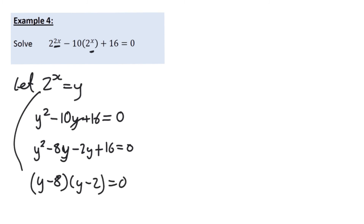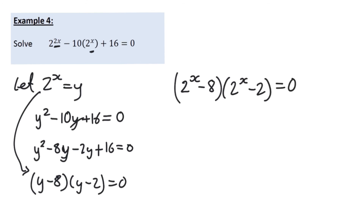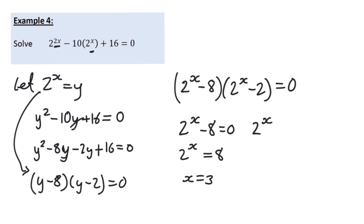Factorising gives (y minus 8)(y minus 2) equals 0. Substituting 2 to the power of x back in: (2 to the power of x minus 8)(2 to the power of x minus 2) equals 0. So 2 to the power of x equals 8, which means x equals 3. On the other side, 2 to the power of x equals 2, which is obviously x equals 1. If needed you could use logarithms — for example log base 2 of 8 — but the numbers are usually simple enough not to require it.